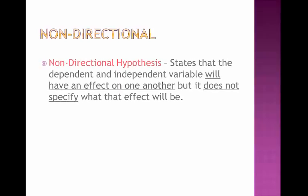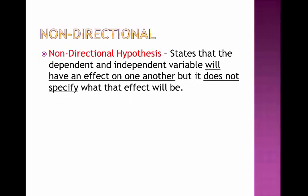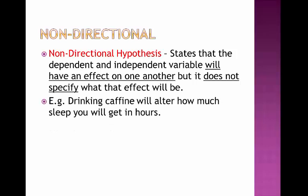A non-directional hypothesis states that there will be an effect between the dependent and independent variable, but it doesn't specify what the direction of that effect will be. For example, drinking caffeine will alter how much sleep you will get in hours. It clearly states there will be an effect on the dependent variable, which is how much sleep you are going to get, and the independent variable, how much caffeine you drink, but it doesn't say whether that will mean you get more sleep or less sleep.